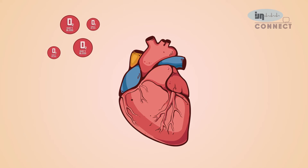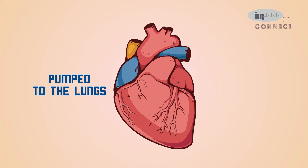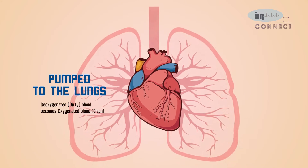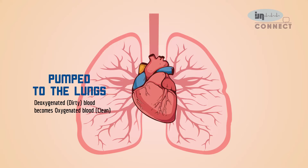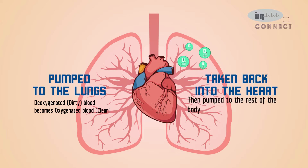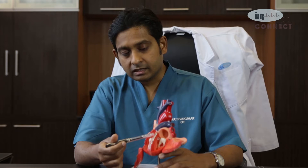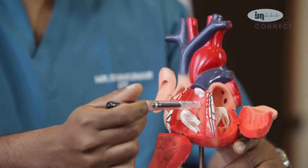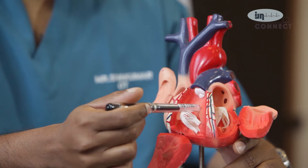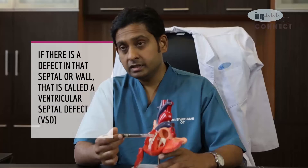The deoxygenated or dirty blood comes into the right heart, and from here the blood is pumped into the lungs. In the lungs, the deoxygenated blood becomes oxygenated or clean blood, and that comes to the left heart. From the left heart, the oxygenated blood goes into a large blood vessel and travels to the rest of the body. There is a wall or septum that separates the two upper and two lower chambers. If there is a defect in the septum between the two lower chambers, you call that a ventricular septal defect.